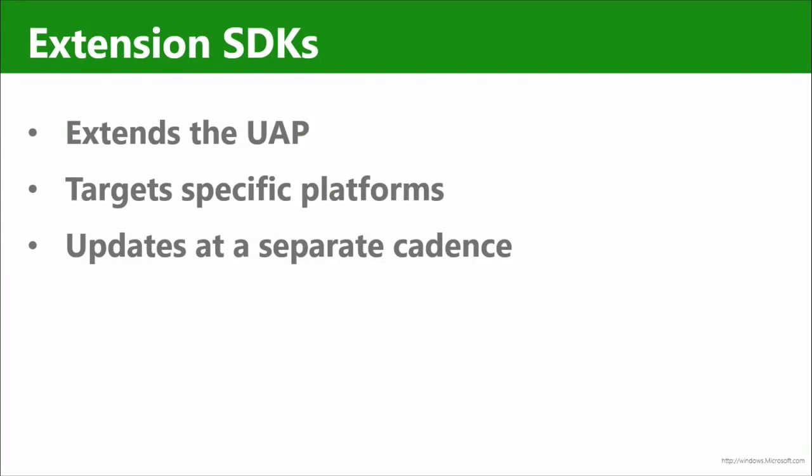Extension SDKs allow that default UAP to go a little bit further. I get to take advantage of the capabilities of a device like a scanner, or the capabilities of an Xbox like a remote control, or maybe an API that's special for it like the avatar API on Xbox. We use extension APIs to extend UAP, but also allow it to target specific platforms. And that targeting doesn't spoil the opportunity for it to run on all the different devices — it doesn't mean we have to have multiple binaries anymore. It also enables these SDKs to be released at a cadence that they need to be, independently of the underlying UAP.